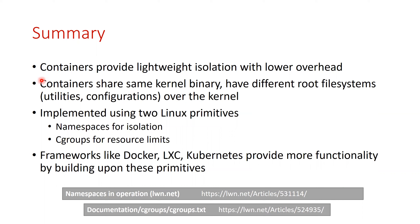In summary, this lecture has covered the basic building blocks of containers. Containers are a way to provide lightweight isolation with lower overhead than virtual machines — the lower overhead comes from containers sharing the same underlying OS image while having different views for various resources. This is implemented using two Linux primitives: namespaces for isolation and cgroups to enforce resource limits. All frameworks like Docker, LXC, and Kubernetes build upon these two building blocks. For this virtualization course, it is essential that you get comfortable with namespaces and cgroups, and the programming assignment will let you create your own container using these building blocks.